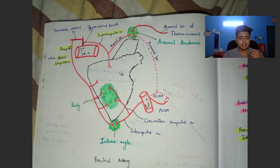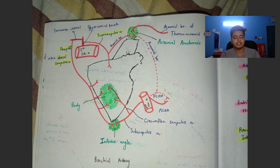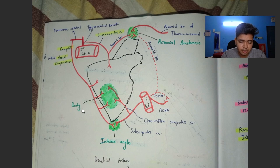There are three sites in which the anastomosis occurs around the scapula. The first site is the acromial anastomosis, then an anastomosis occurs in the body of the scapula, and at the inferior angle.